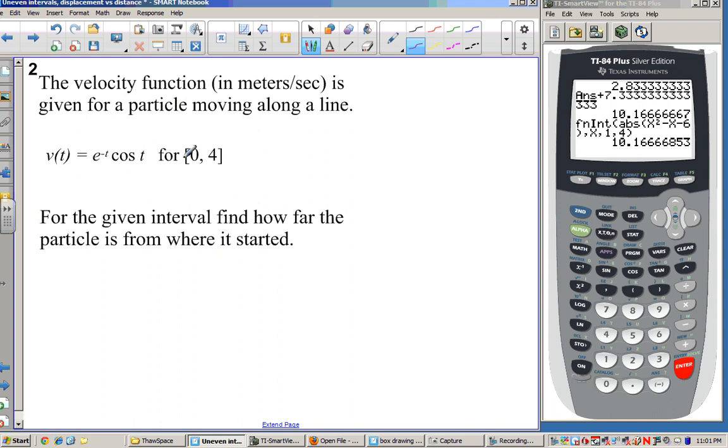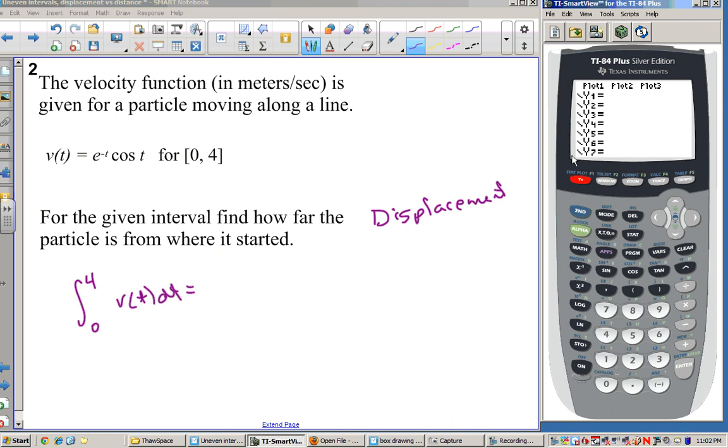So now let's look at this next one. This time we have a velocity function in meters per second, and it's moving along a line. And here it is, e to the negative t cosine t. And our interval is from 0 to 4 this time. And we're asked, how far is the particle from where it started? When we read that, we should recognize that this is going to be displacement. And all I need to do here is take the integral from 0 to 4 of this velocity function.